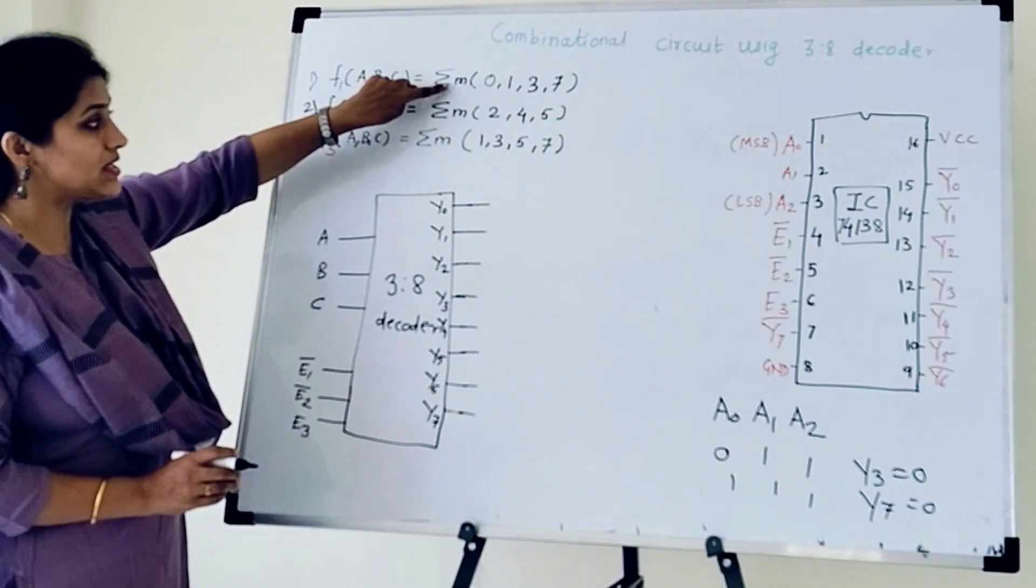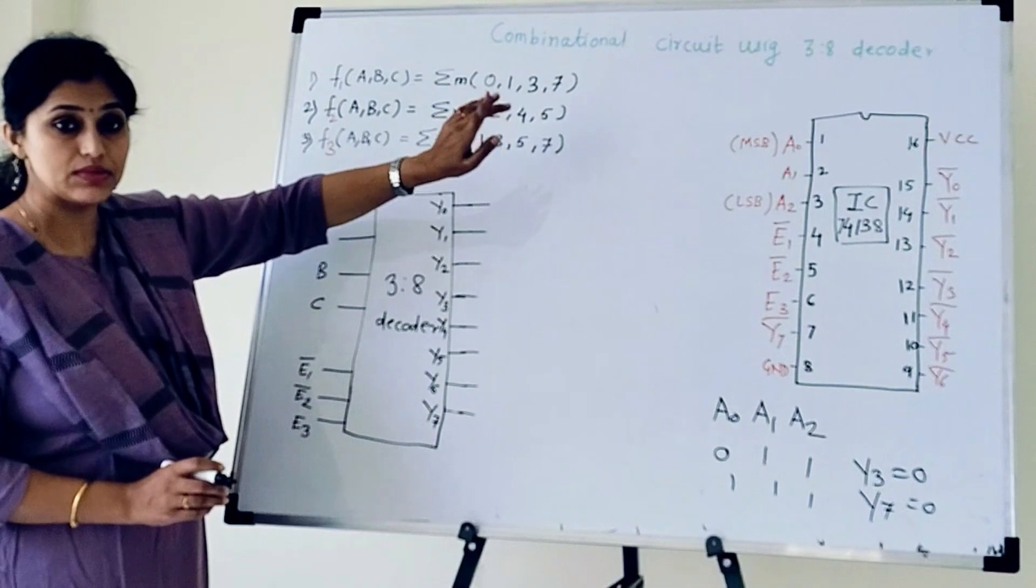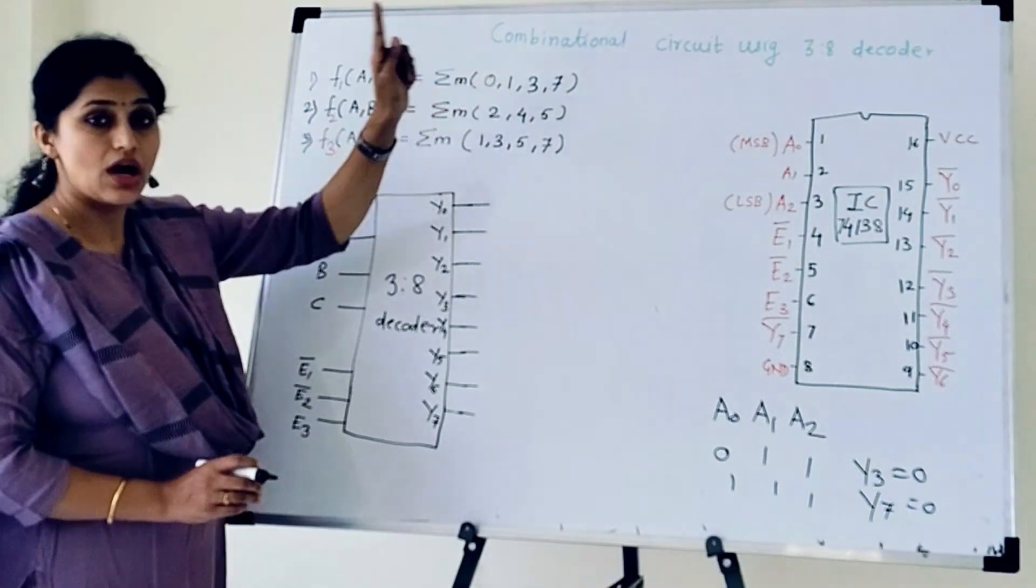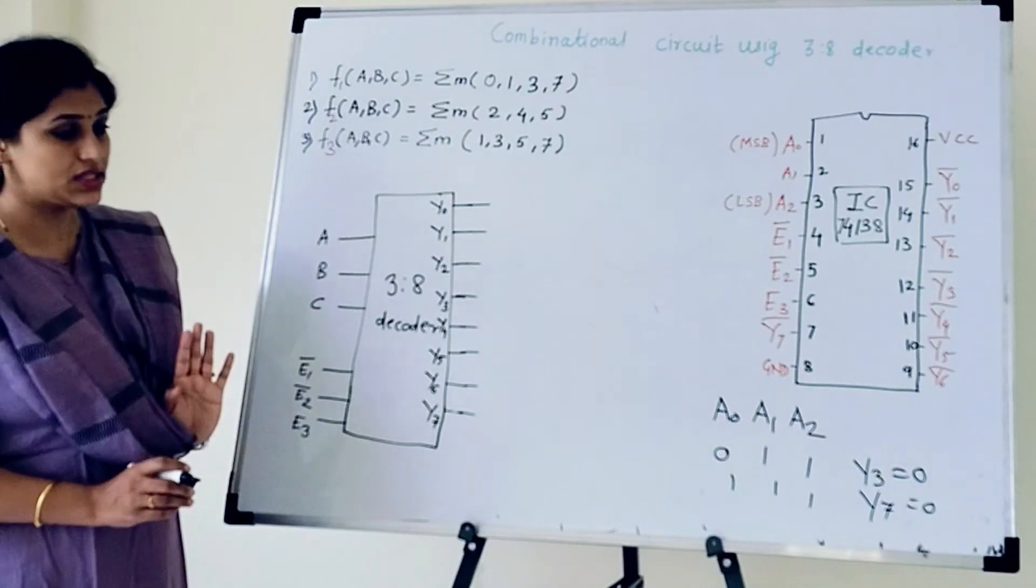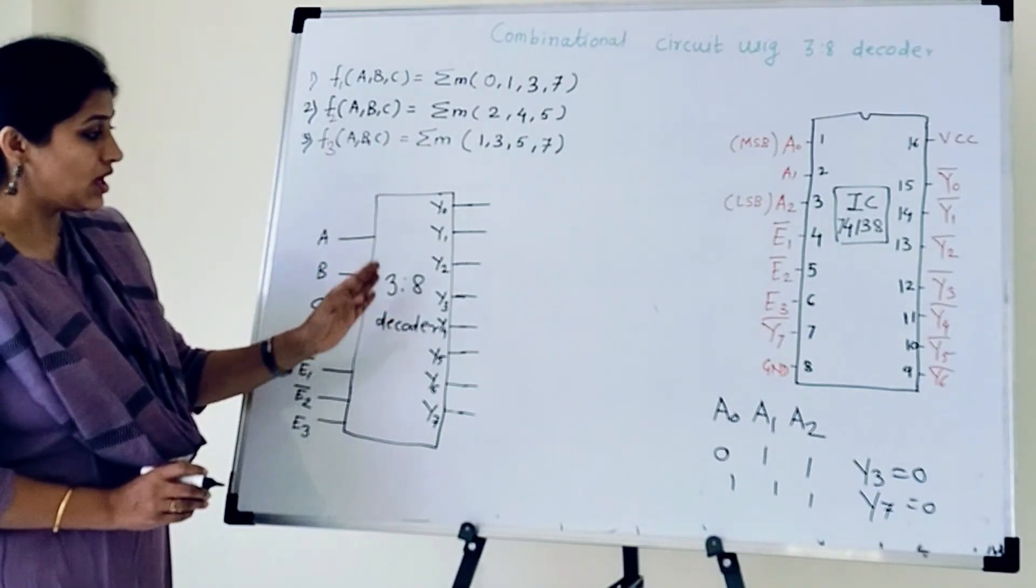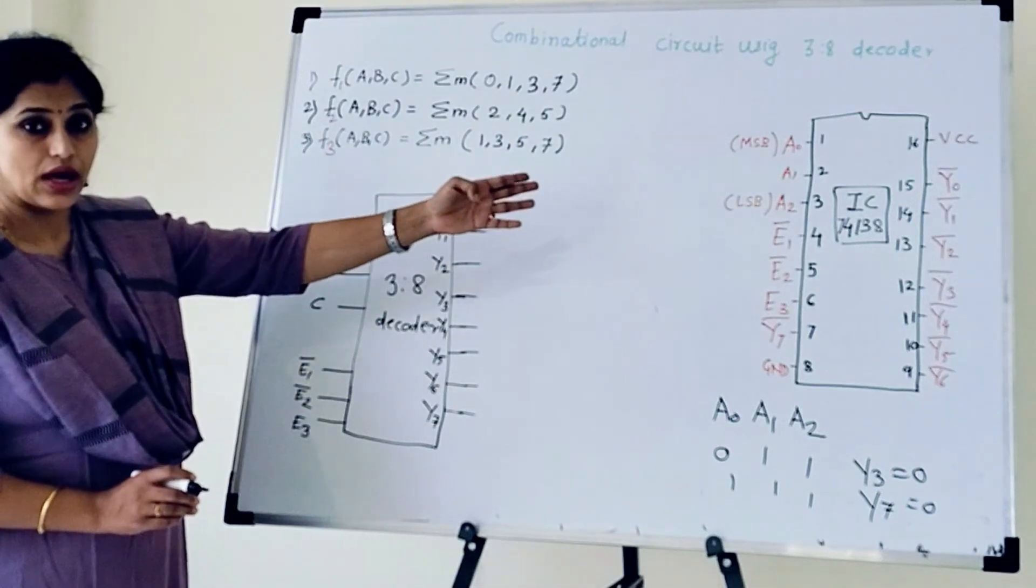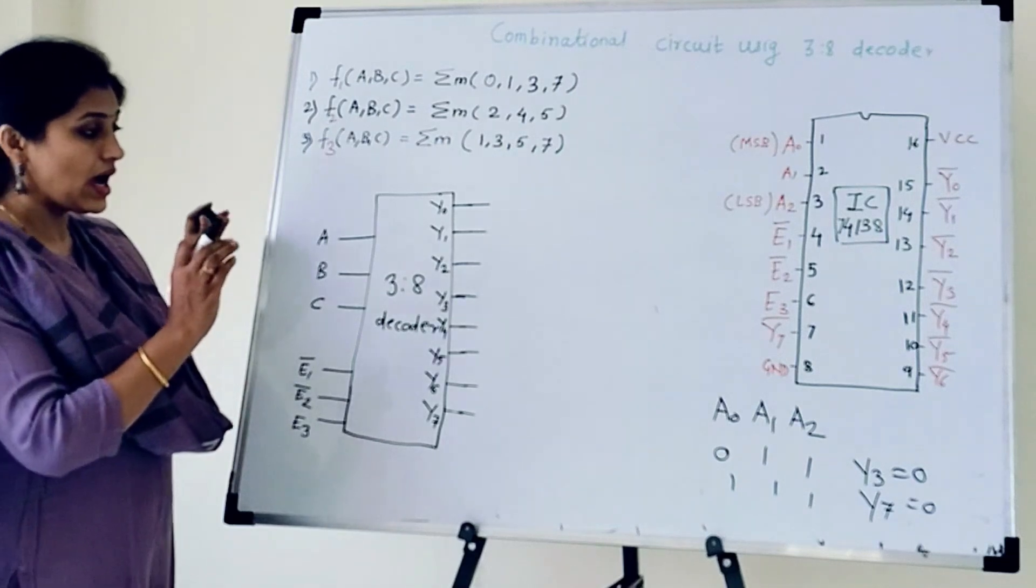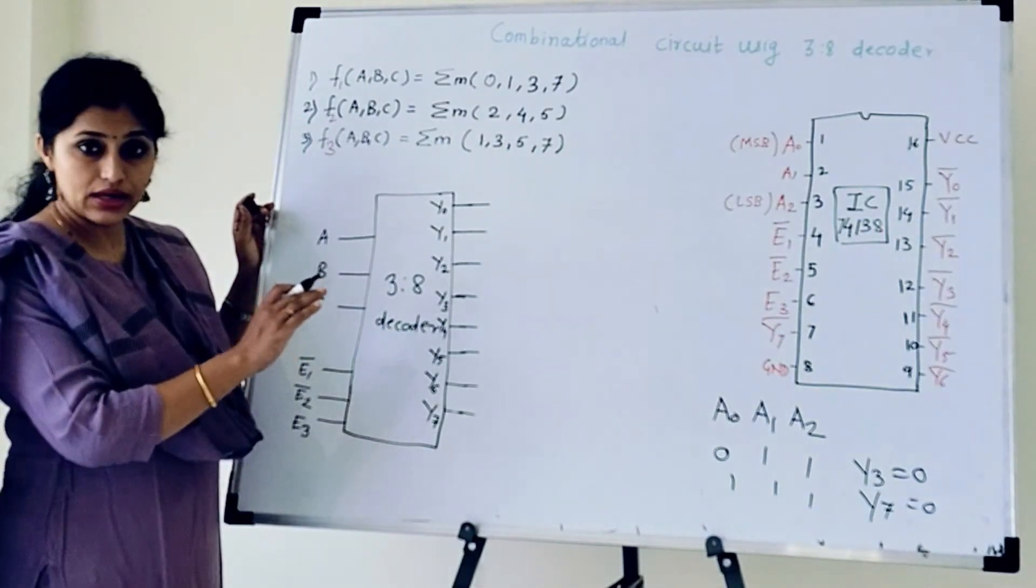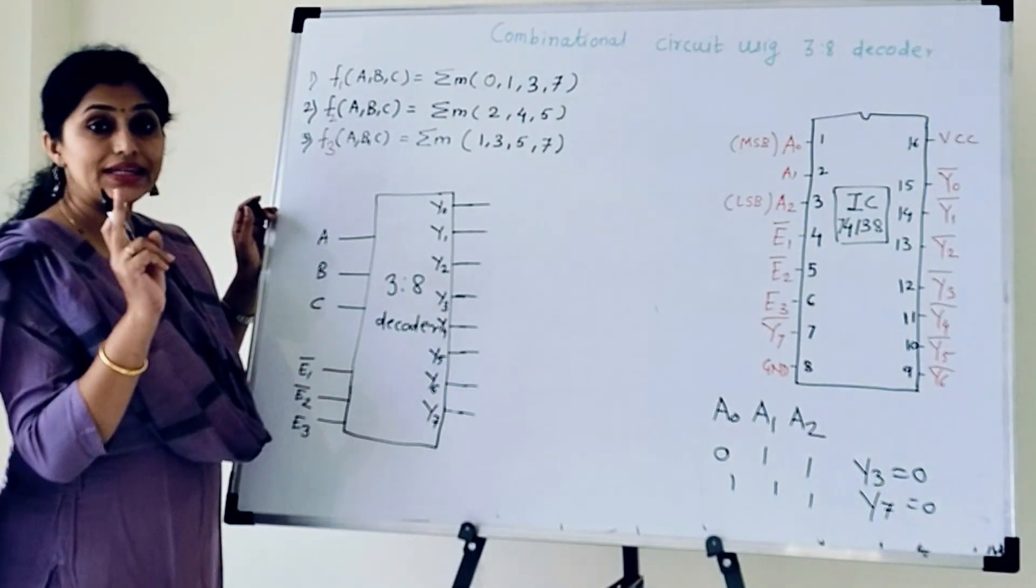F1 summation of M, that is minterms 0, 1, 3, 7. The terms given in bracket are minterms. It means for these terms output must be 1 and for remaining terms output must be 0. But what we have here is 3-to-8 decoder 138. And 138 generates active low output. So we need to take a gate which will invert the outputs. So we will take NAND gate.